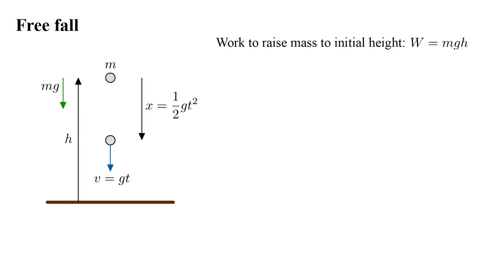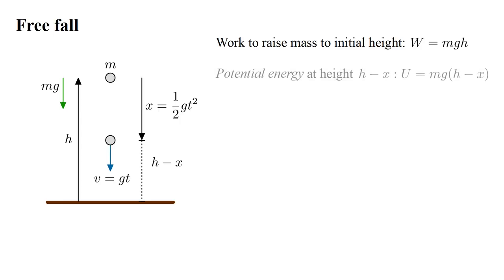And the velocity is gt. When the mass has fallen a distance x, its height above the ground is h minus x. Let's call the work required to raise the object to this height its potential energy, denoted by the letter u. We write u equals mg times (h minus x).